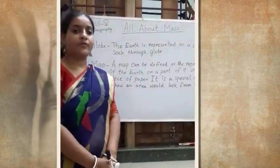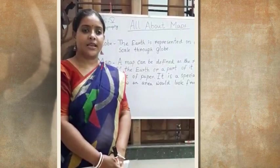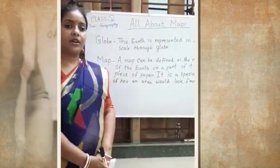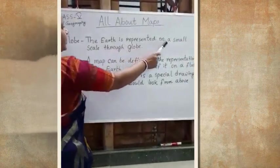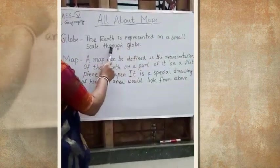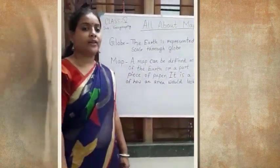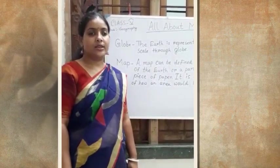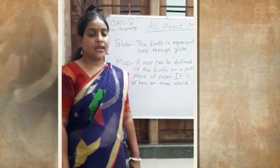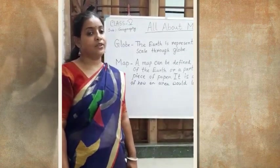Now we are familiar with the word globe, map, atlas. Let us see what is globe. The earth is represented on a small scale through globe. Globe is a true replica of the earth and it shows continents, water bodies, countries, cities, and important cities within the countries.